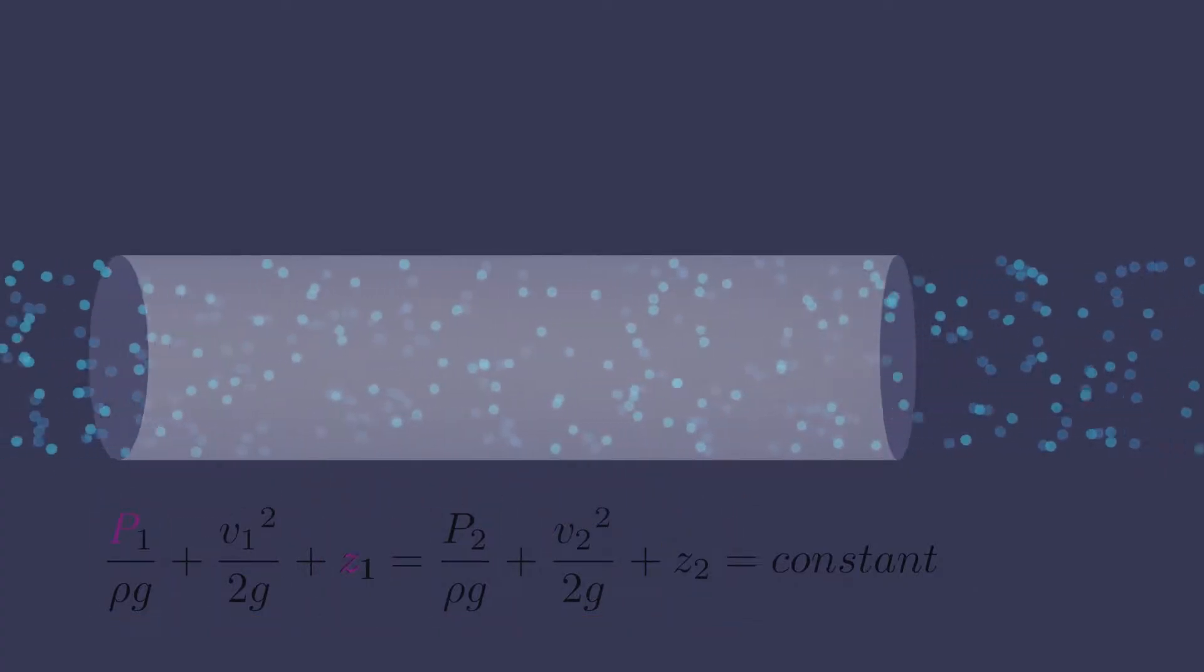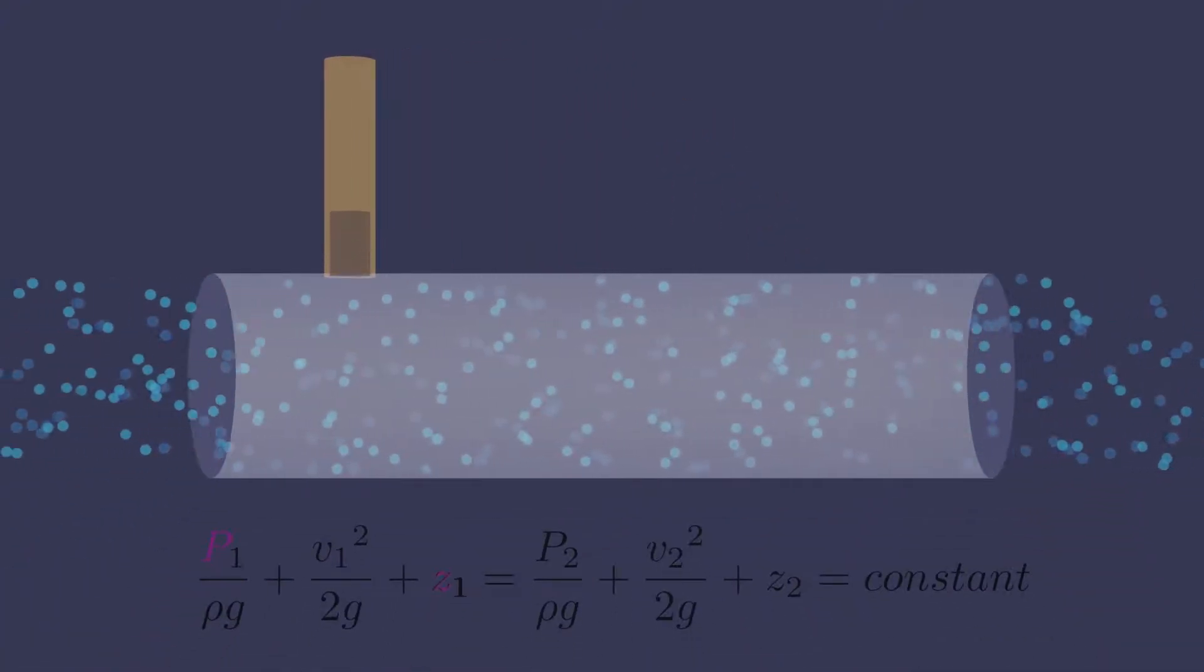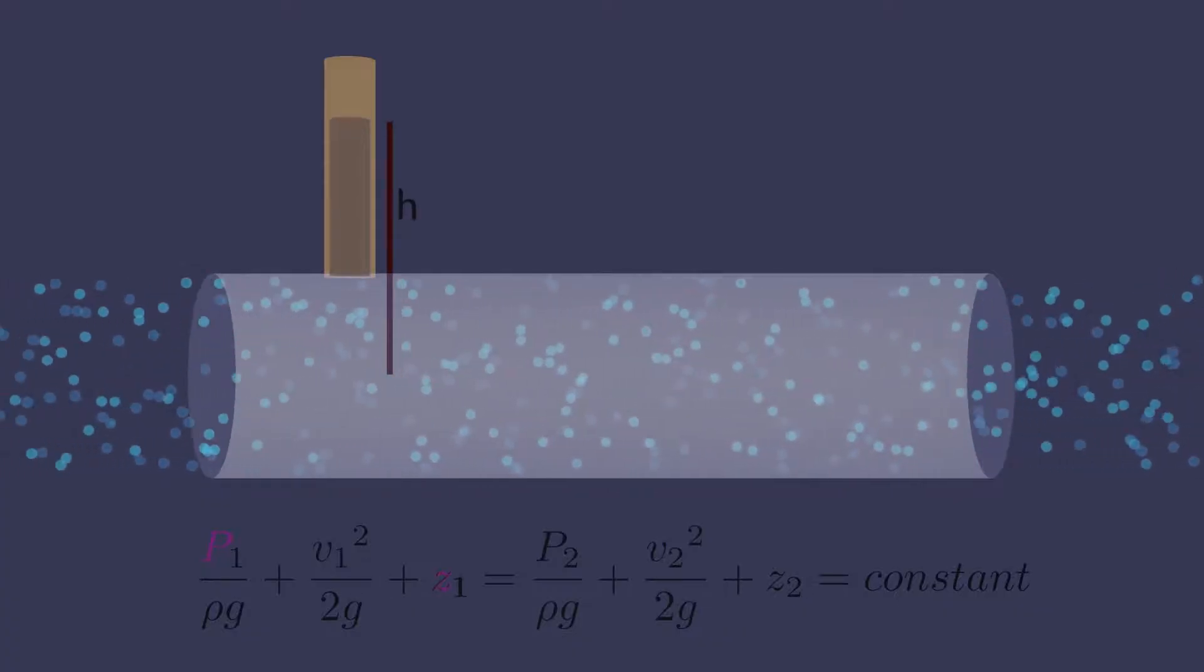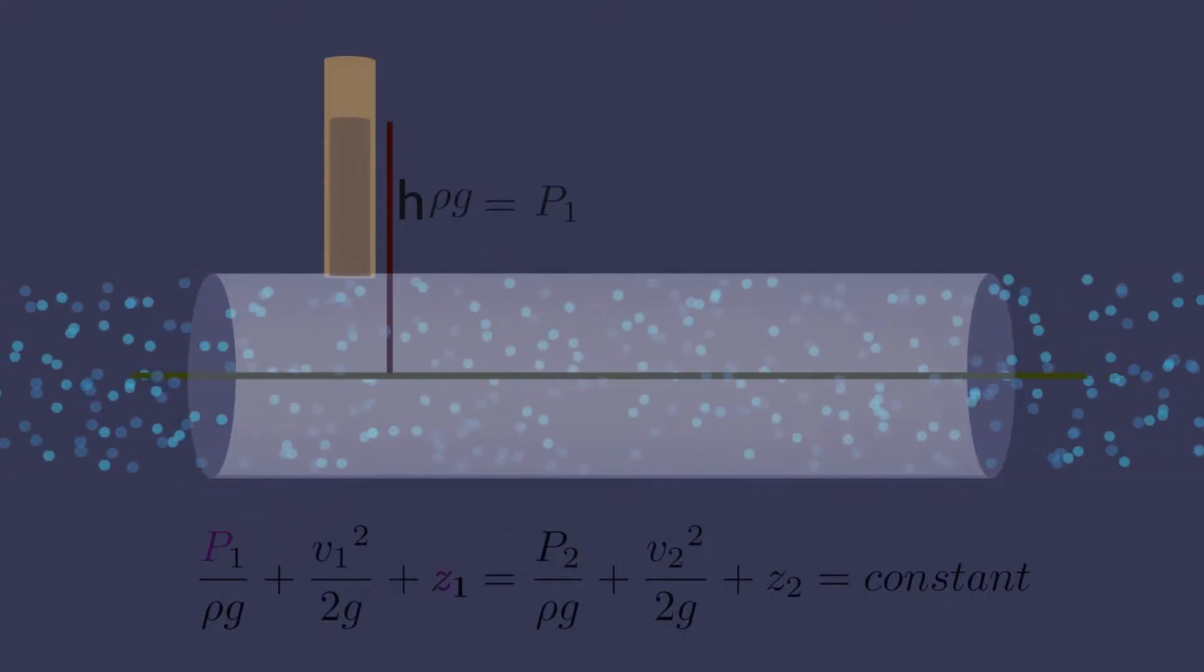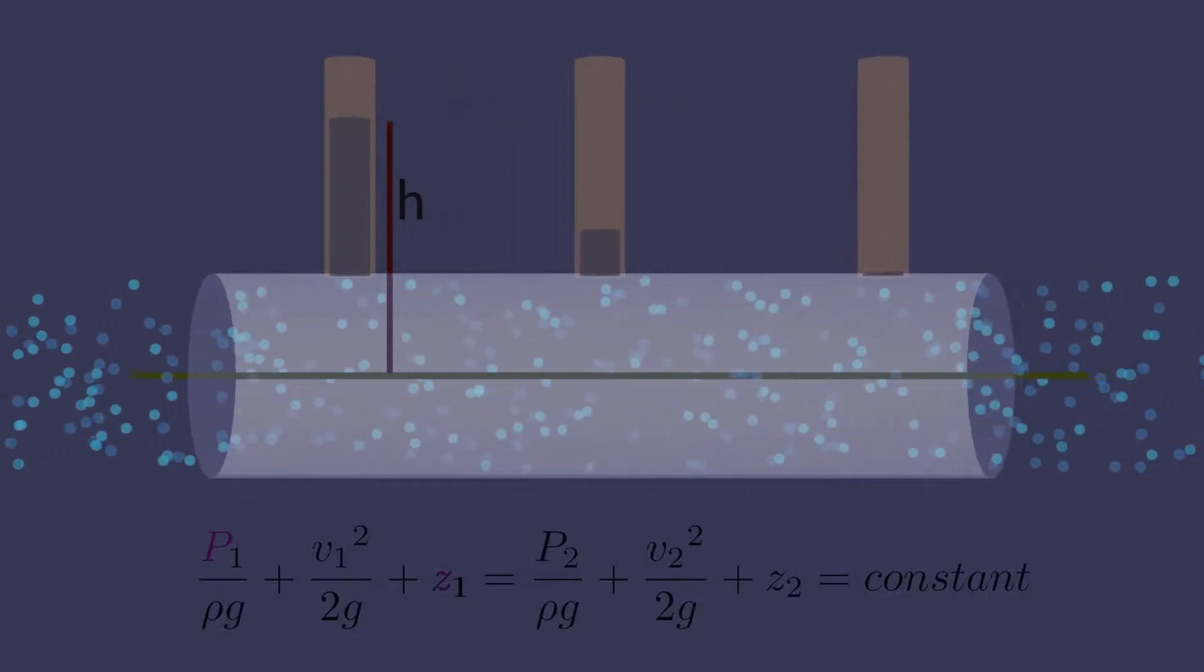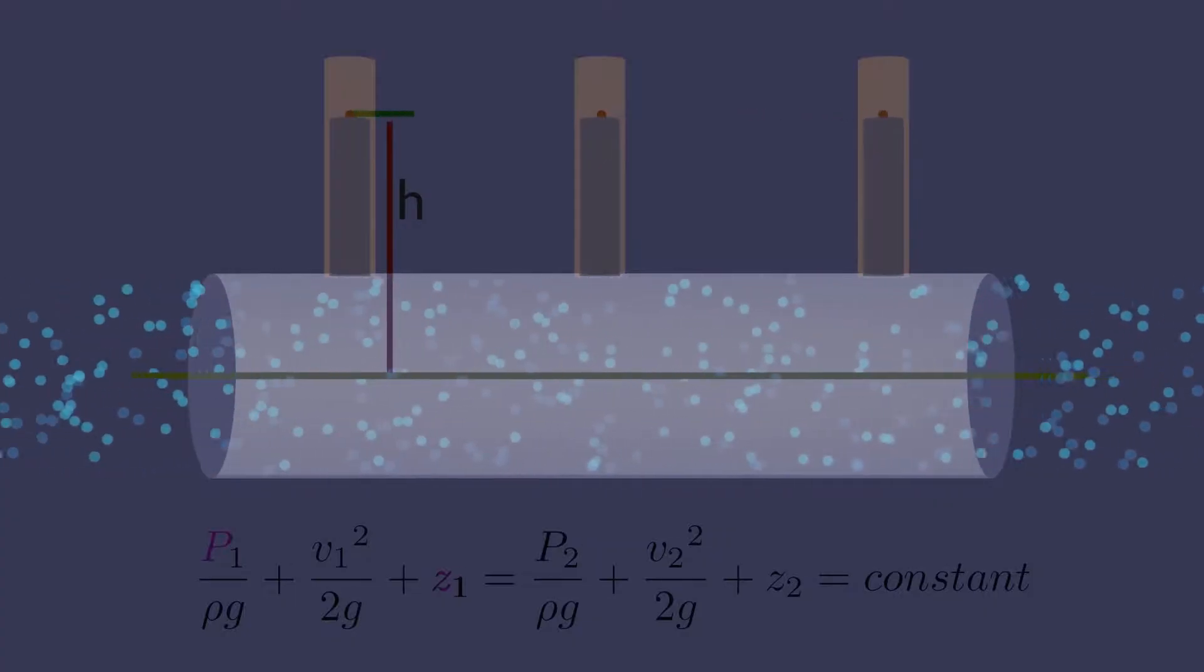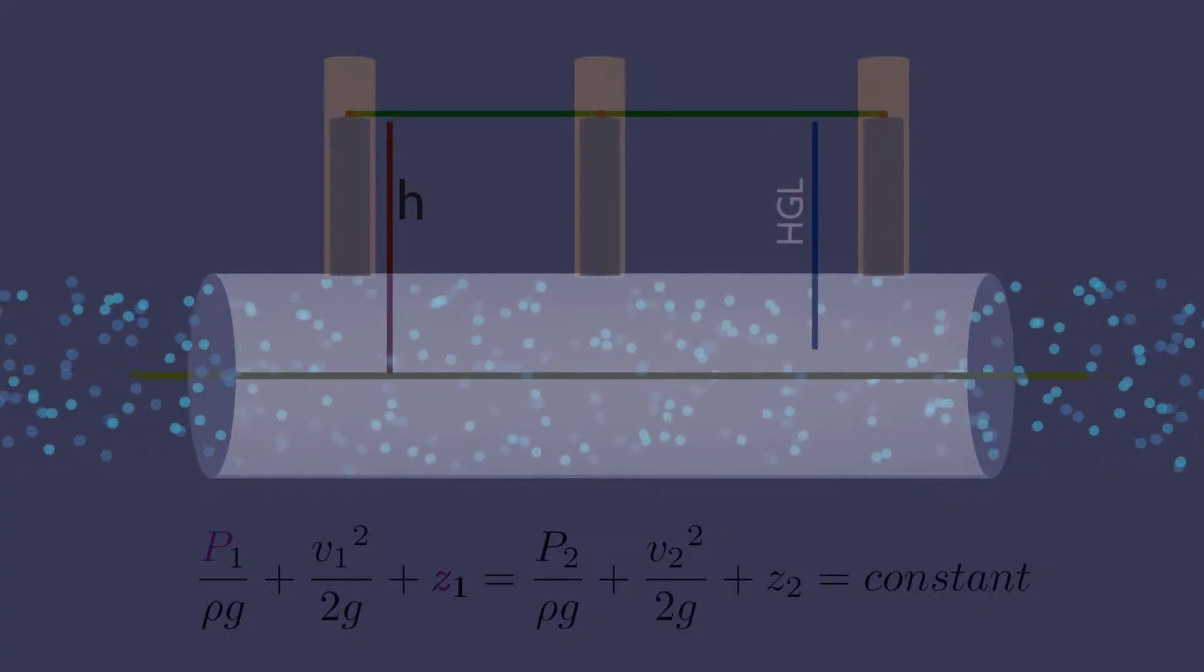Hydraulic grade line can be visualized with a piezometer tube. It measures static pressure by calculating the liquid column height through the center of the pipe. If you tap piezometers into several locations and draw a curve through the liquid levels, then the hydraulic grade line is obtained.